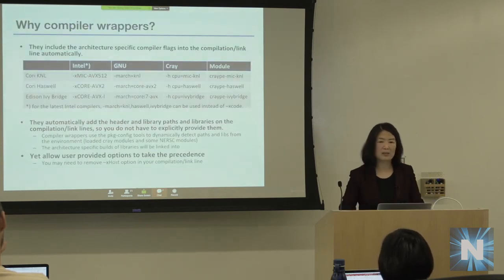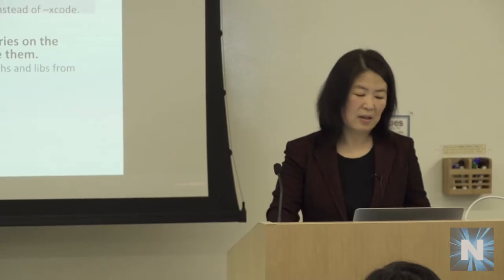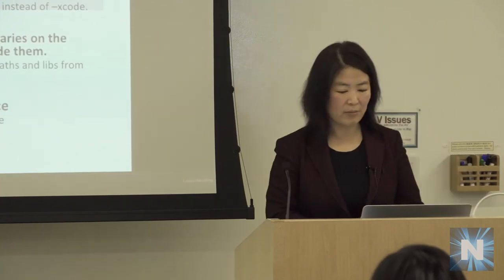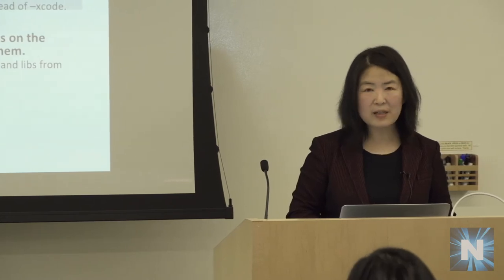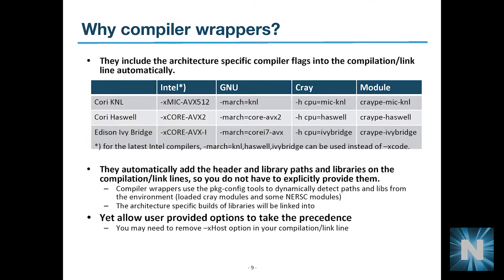There are good reasons why we recommend compiler wrappers. Definitely the number one reason is ease — it handles all the compile and link lines automatically. All you need to do is call the compiler wrapper followed by your code name; it will be automatically linked to the appropriate libraries. What library to link depends on what modules are loaded in your environment. One important thing the compiler wrapper does first is include architecture-specific flags into the compilation. For Cori KNL, if you load the right module, it will include the xmic-avx512 flag, which includes the specific instructions for KNL.